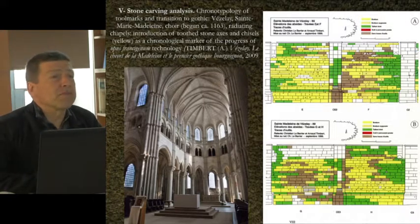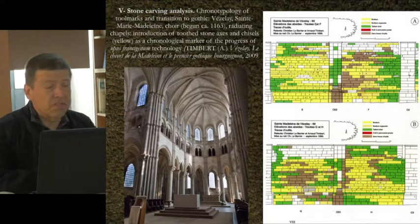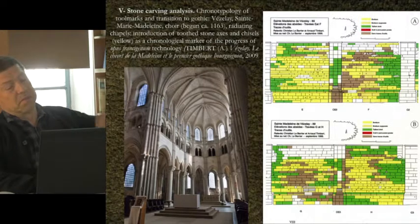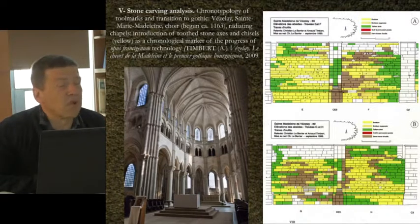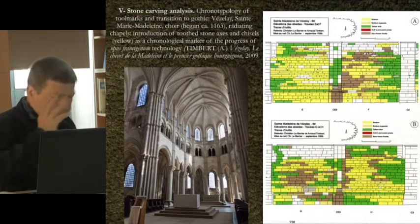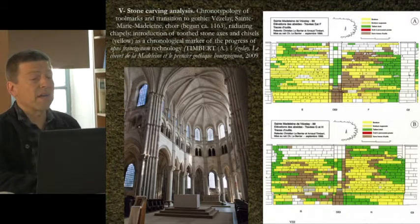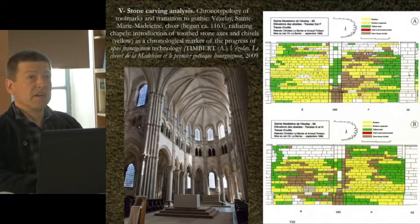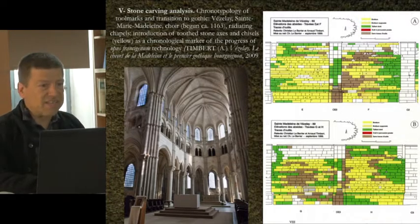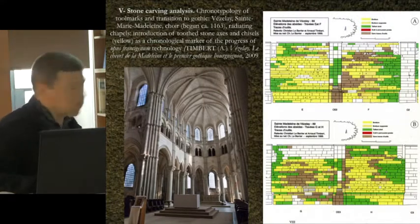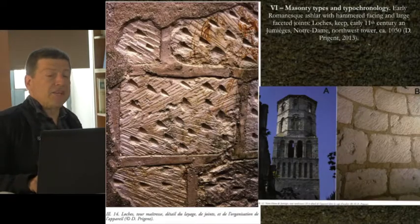This type of analysis has yielded essential clues, for instance at Vézelay, which is early Gothic but built as a second stage rebuilding of a Romanesque church with a transitional choice of techniques. Arnold Timber highlighted here the introduction of a tool which is typically Gothic — the toothed stone hammer — and you can see with this color code the different zones of this choir where they were introduced.